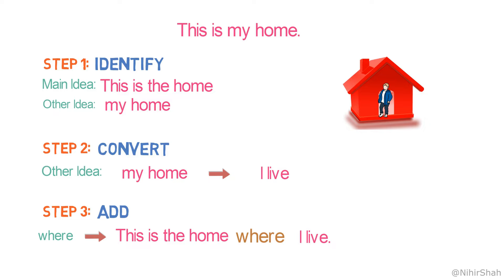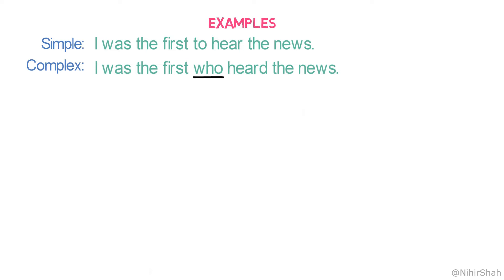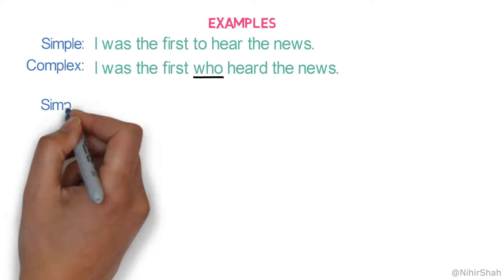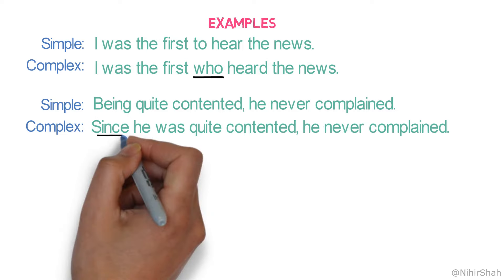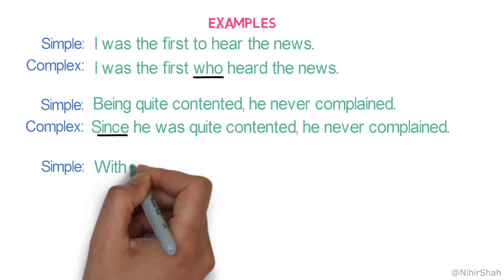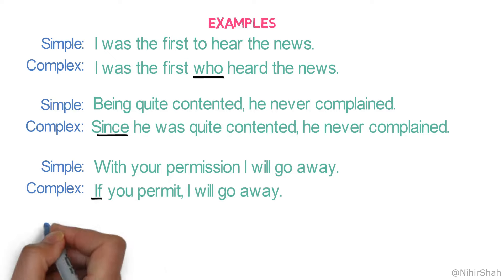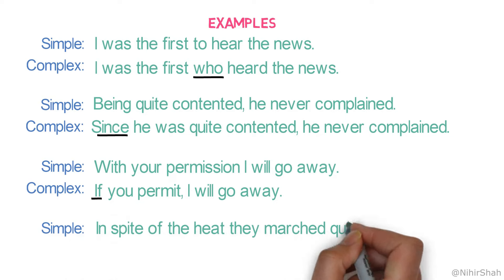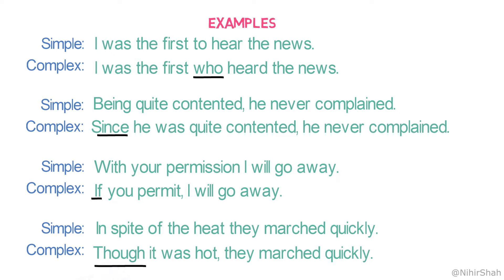I hope now you are clear on the steps. I would be giving you some more examples without explaining the steps in detail. Simple sentence: 'I was the first to hear the news.' Converting it into a complex sentence: 'I was the first who heard the news.' Note that 'who' is also acting as a subject of the dependent clause. Next: 'Being quite contented, he never complained' becomes 'Since he was quite contented, he never complained' — where 'since' is the subordinating conjunction. Next: 'With your permission, I will go away' becomes 'If you permit, I will go away.' And: 'In spite of the heat, they marched quickly' becomes 'Though it was hot, they marched quickly' — where 'though' is the subordinating conjunction.